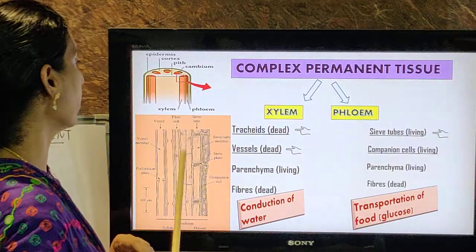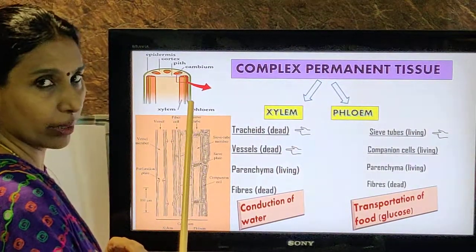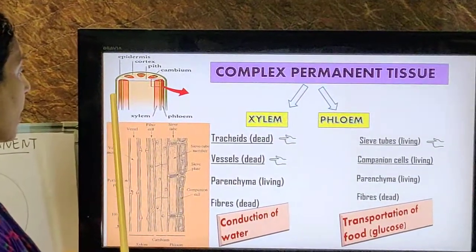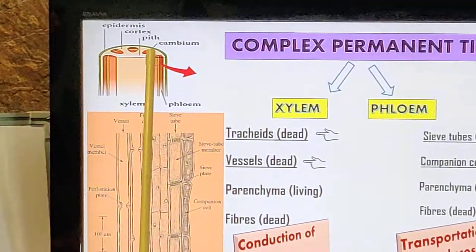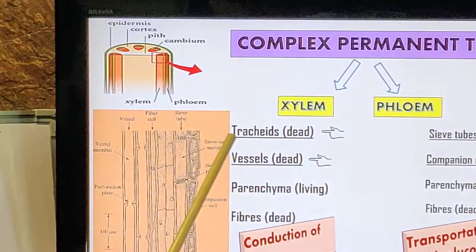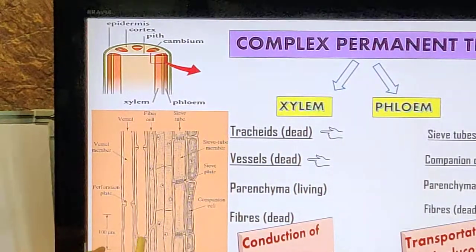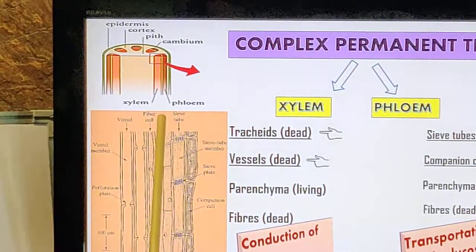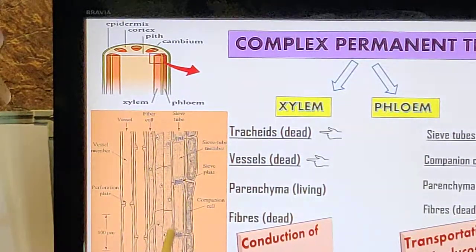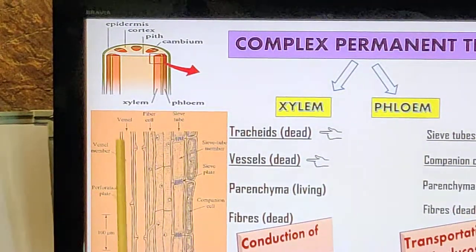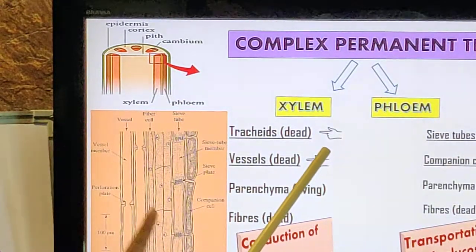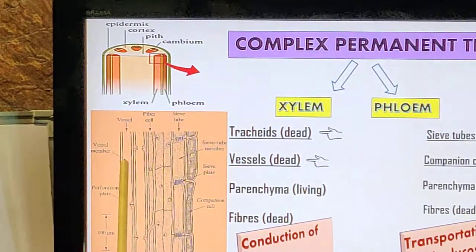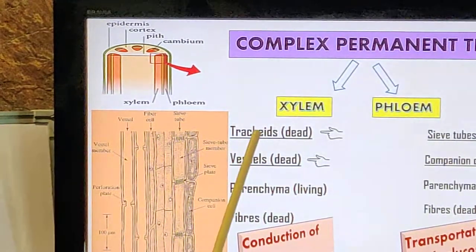Observe this picture: we have already seen the structure of the stem and how vascular bundles are arranged. You can see the xylem and phloem, and between them a strip of lateral meristem. If you enlarge it, you can see: this is the xylem, this is the cambium or lateral meristem, and you have the phloem. This complete structure is one vascular bundle. If you observe the xylem, there is no nucleus — these are long cells called tracheids and vessels.